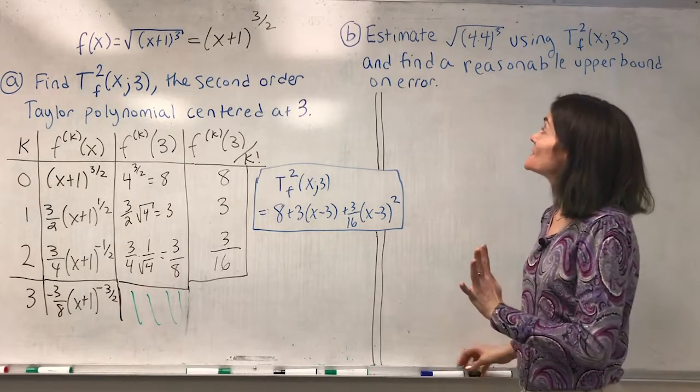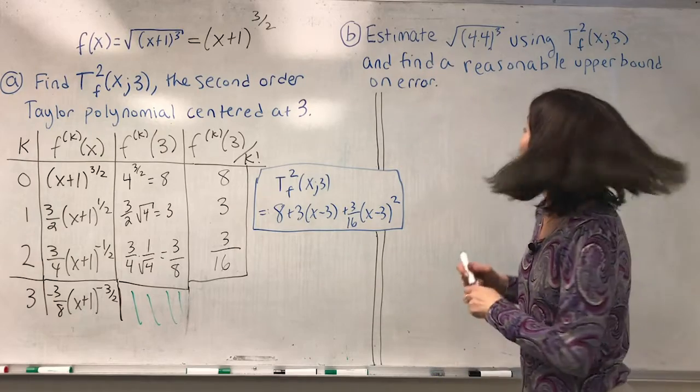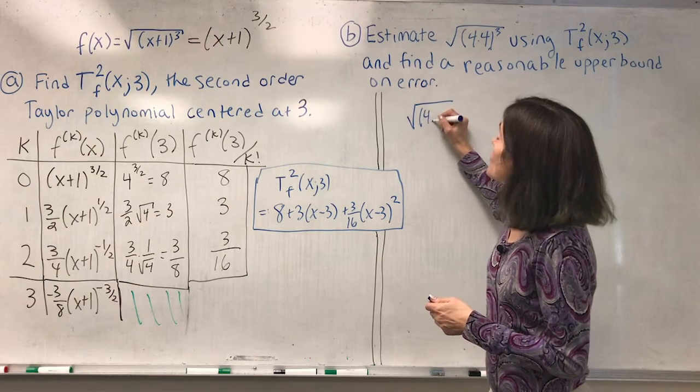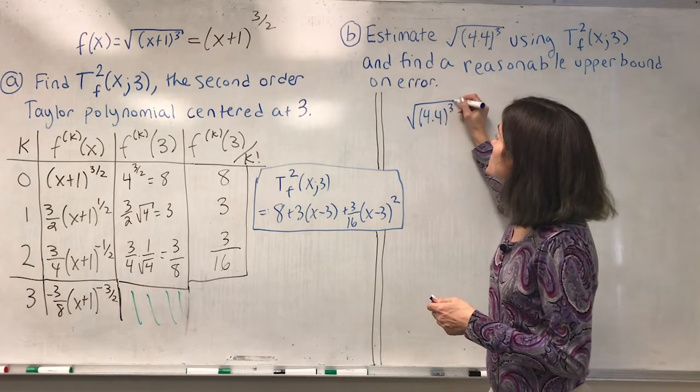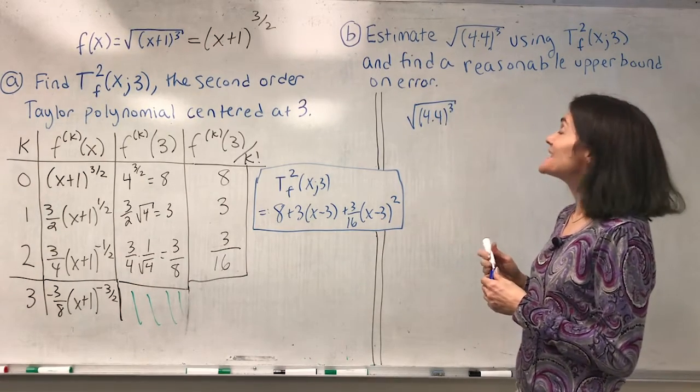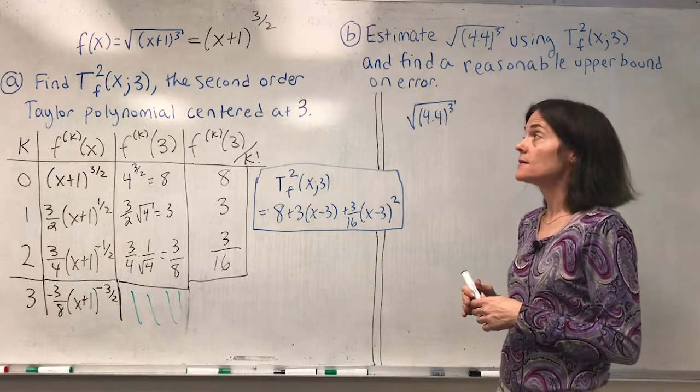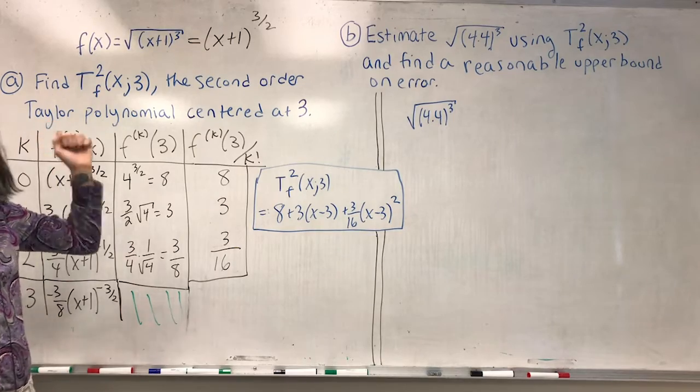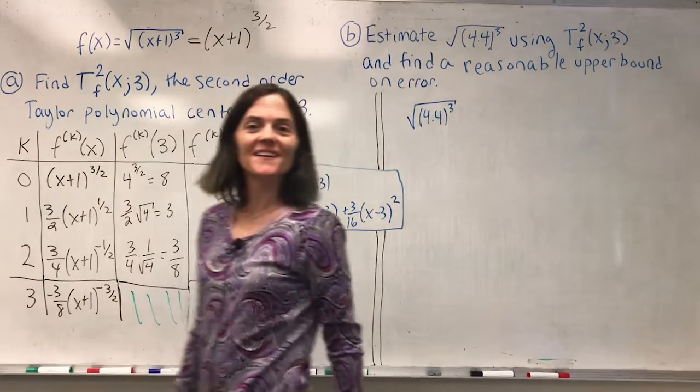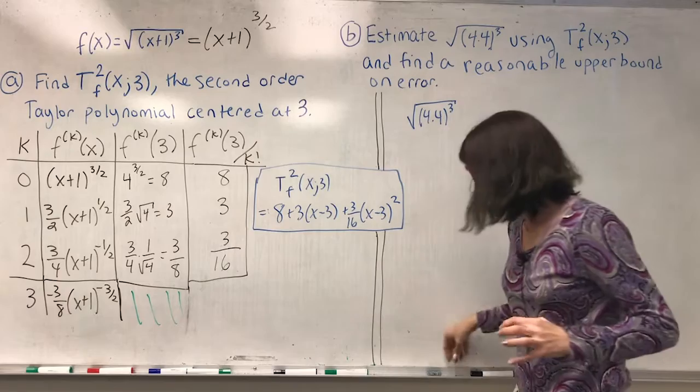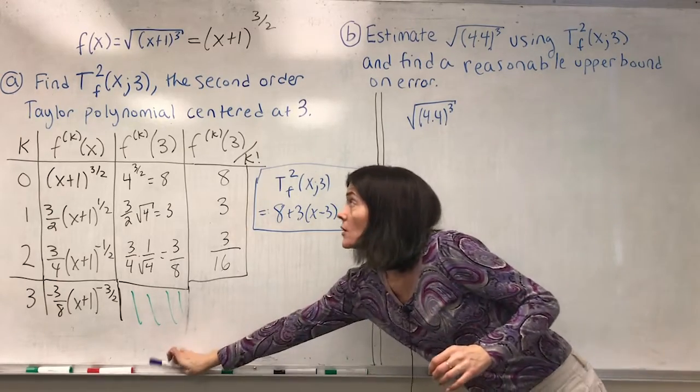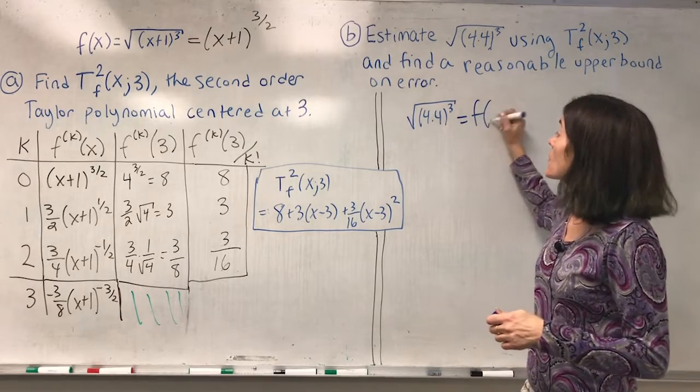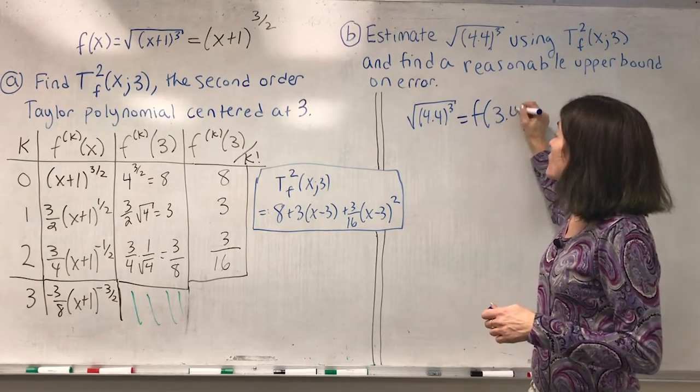Part B. The first thing we need to do is estimate the square root of 4.4 cubed. Well, we need to figure out what x is. If we look at this function, we see x plus 1 to a power. This is f of, well, that would say that x plus 1 must be 4.4, or x equals 3.4.